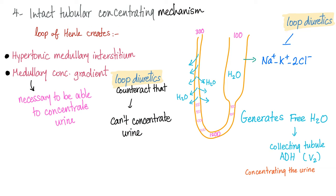Intact tubular concentrating mechanisms: the loop of Henle concentrates your urine by creating the hypertonic medullary interstitium and the medullary concentration gradient. It has the sodium-potassium-2-chloride channel, which generates free water by extracting all electrolytes away from the filtrate, leaving the tubule with only water — this is called free water. Free water goes to the collecting tubule, acted upon by ADH through the V2 receptor, leading to concentration of urine. But loop diuretics counteract this ability, so with loop diuretics, your urine is dilute.